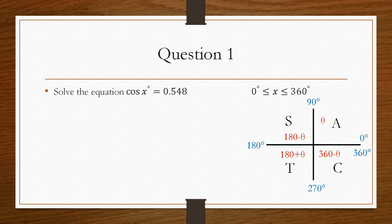So if we take a look at question number one, it says solve the equation cos x equals 0.548. So essentially what we have to do is we have this constraint that x is between 0 and 360 degrees. So we need to find the values of x that correspond to cos being 0.548. So we rearrange for x.